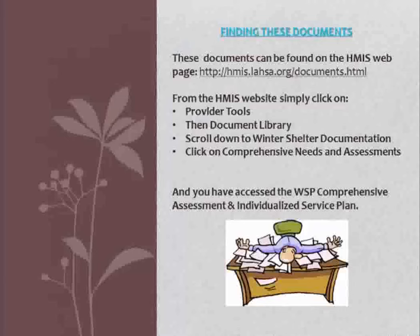Finding these documents: they can be found on the HMIS web page. From the HMIS web page, simply click on Provider's Tools, then Document Library, scroll down to the Winter Shelter documentation, click on Comprehensive Needs and Assessments, and you will have access to the WSP Comprehensive Assessment and Individualized Service Plan.